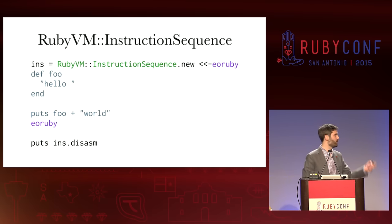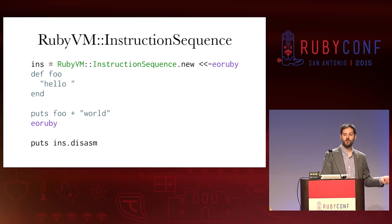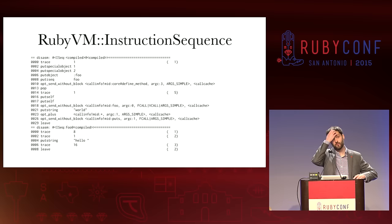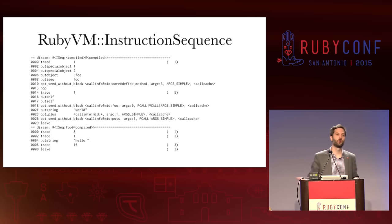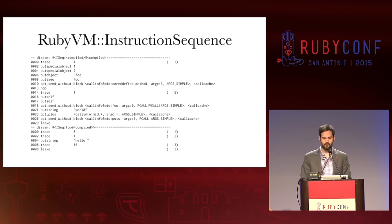We're going to follow that code through and see what it actually does when we compile code. The way you use it is just like this: pass it a block of code or pass it a string of code and then disassemble it. If I run this code and print it out, the results show you all the instructions for that particular chunk of code. So if you're curious about what instructions that code is equivalent to, you can just run this and find out.